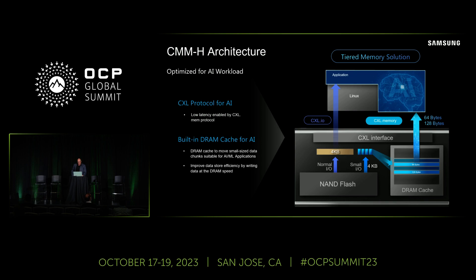Persistence is just one feature — this is another very compelling feature for CMMH. In the tiered memory architecture, because it supports both .io and .mem, you can read and write directly to the NAND flash media as you would with a standard NVMe SSD, or you can read back from the DRAM cache without having to go through the NAND flash itself. It's a dual-mode operation, and in the future we'll be looking at read and write performance on the cache as well.